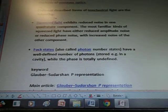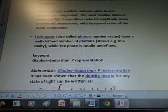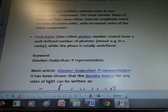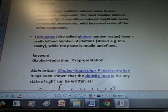Fock states, also called photon number states, have a well-defined number of photons stored, for example, in a cavity, while the phase is totally undefined.